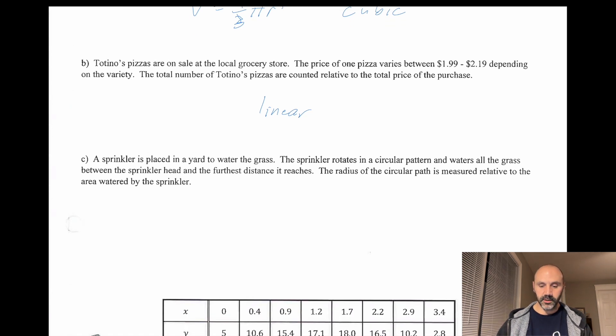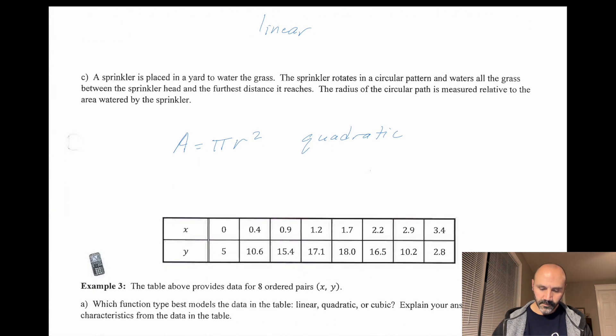C, sprinkler is placed in a yard to water the grass. The sprinkler rotates in a circular pattern and waters all the grass. The radius of the circular path is measured relative to the area watered by the sprinkler. Area is π r squared. So this is going to be a quadratic best fit.